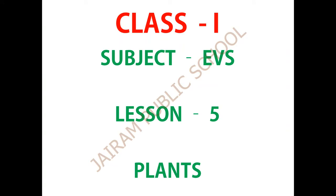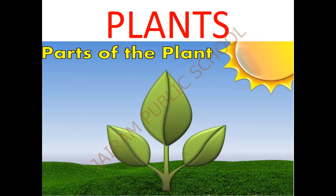This is class one, subject is EVS - environmental studies. The lesson is lesson number five: Plants. P-L-A-N-T-S, plants. Here we are going to see about the plants. See, this is a plant. You can see the parts of the plant. See the color of the plant - it is green. We can also see many plants and many trees outside, all of the same color.